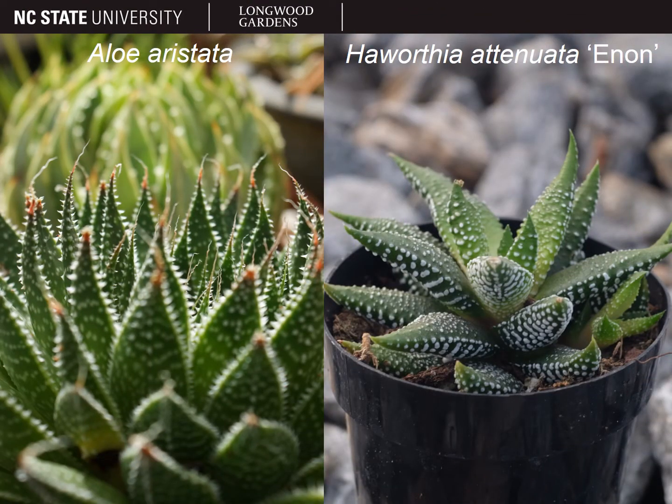Take a good look at the serrated margins of aloe aristata on the left. These margins are the key ID feature that will help you tell the difference between this species and some species of Haworthia on the right that we'll look at later in the unit.